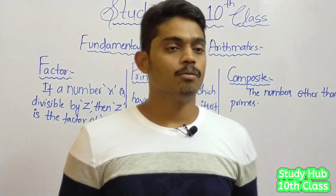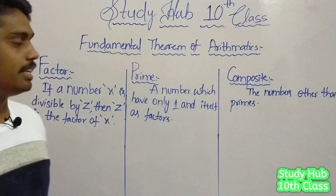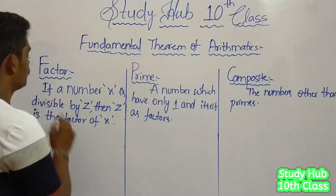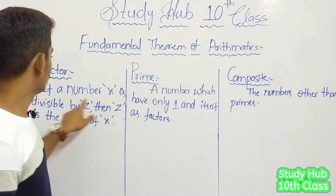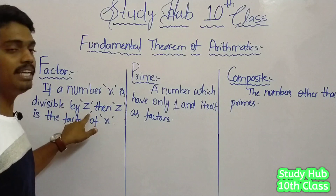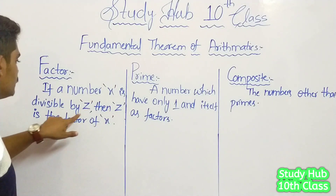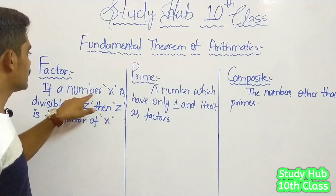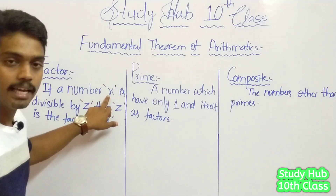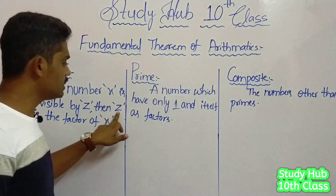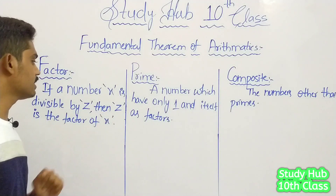Now let us discuss what is a prime number, what is a factor, and what is a composite number in detail. What is a factor? If a number x is divisible by z, then z is considered as the factor of x. Let us consider the number x — if the number is divisible by z, then z is considered as the factor of x.